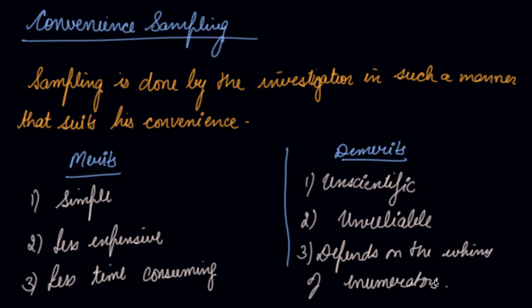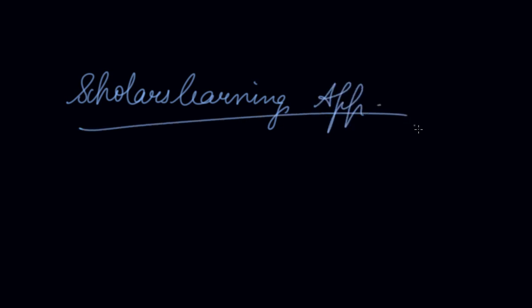Enumerators are the persons which are appointed by the investigator to do the investigation. So it depends on the whims of enumerators, so the data becomes unreliable. I hope you liked our video. Please download our Scholars Learning App and enjoy the learning experience with us.